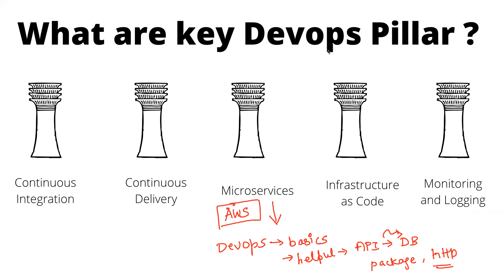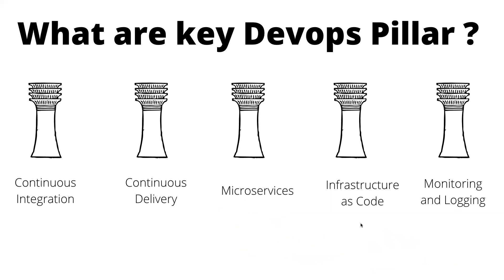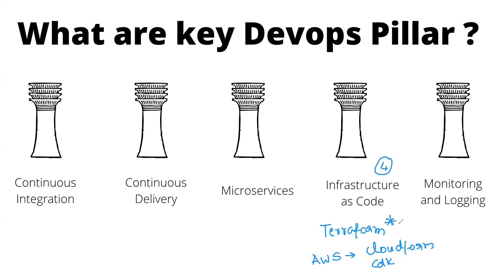The fourth pillar is infrastructure as code. There is a clear winner here: Terraform. You should know Terraform. If you are working with AWS, you can also learn CloudFormation or CDK, but Terraform is the most generalized and preferred tool in the market today. As a DevOps engineer, you must be aware of this section.